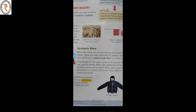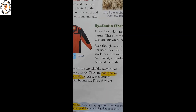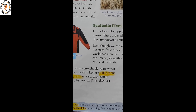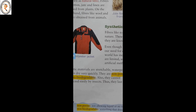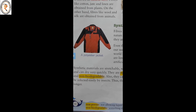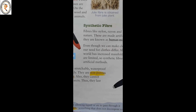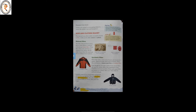Synthetic fiber is called artificial or human-made fiber. Even though we can make clothes from natural fibers, the population of the world has increased greatly, so plant and animal fibers are limited. Therefore synthetic fibers have been made by artificial methods. Synthetic materials are stretchable, waterproof, and can dry very quickly. They are non-porous and non-biodegradable, and cannot be infected easily by insects, so they last longer. Non-porous means not allowing liquid or air to pass through; non-biodegradable means something that does not decompose easily and does not mix with the soil.